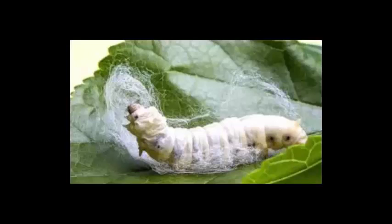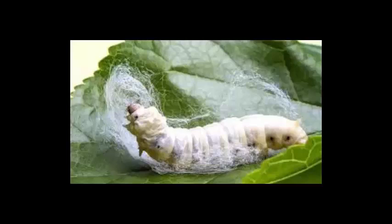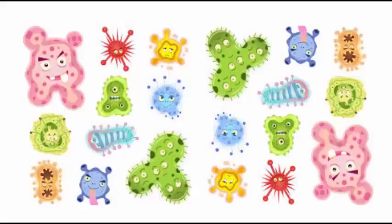Bacillus thuringiensis was discovered by Ishiwaki in 1901 in a diseased silkworm. After its isolation from the gut of this diseased flour moth larvae, the harmful effects of this bacteria on insect larvae were identified. It was seen that this bacterium produced an insecticidal crystal protein, ICP, which forms inclusion bodies of regular bipyramidal or cuboidal crystals during sporulation.